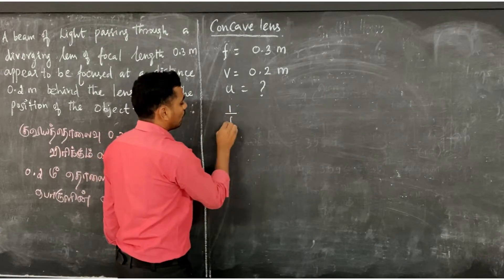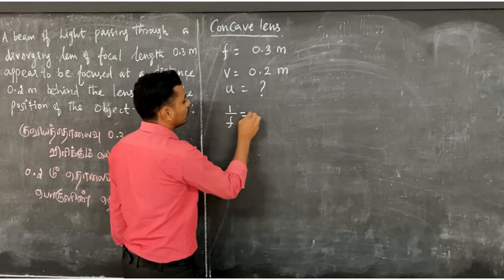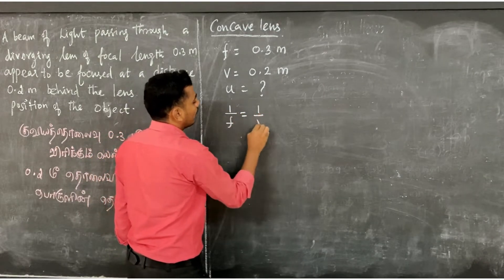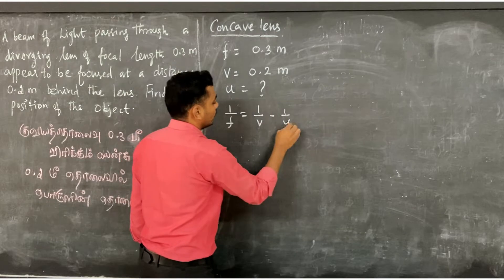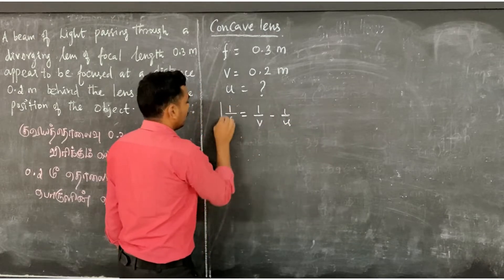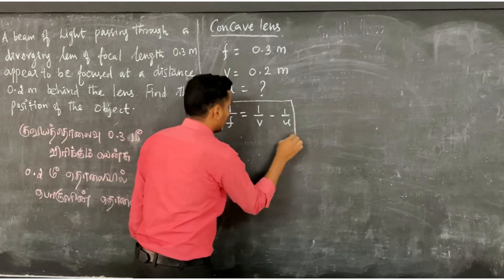Lens formula: 1 by F equals 1 by V minus 1 by U. This is the formula we will apply.